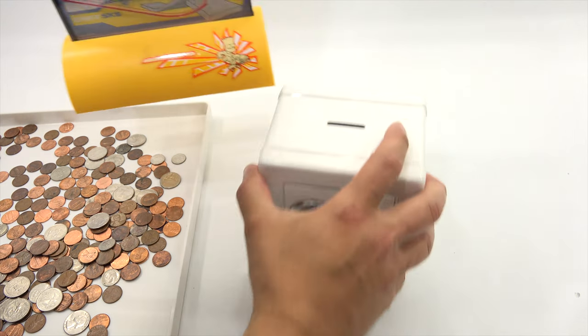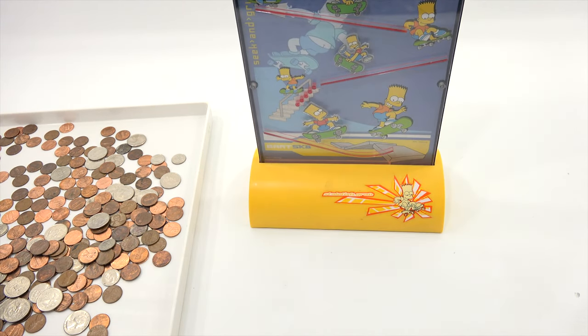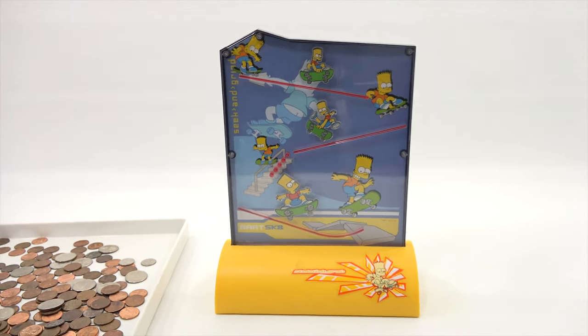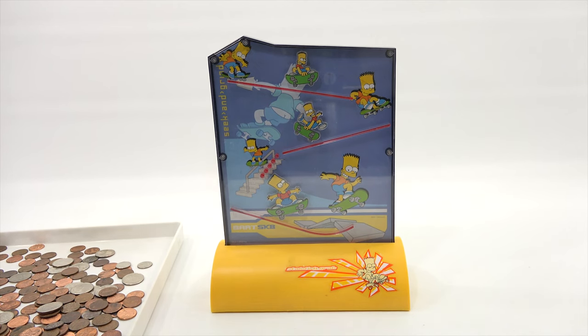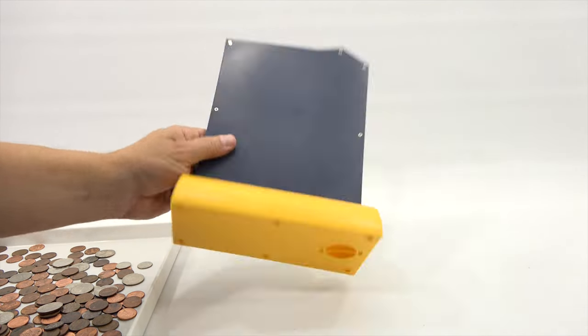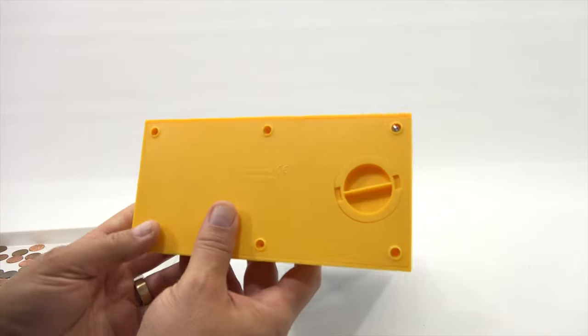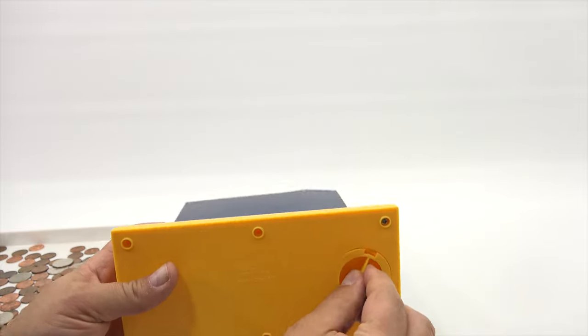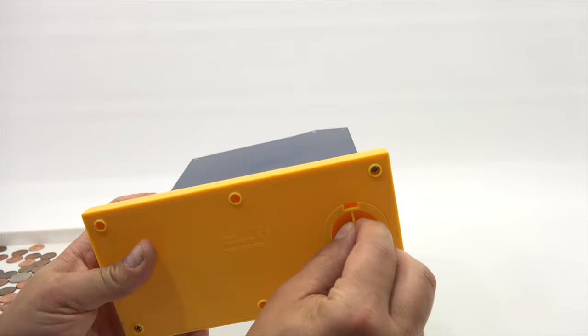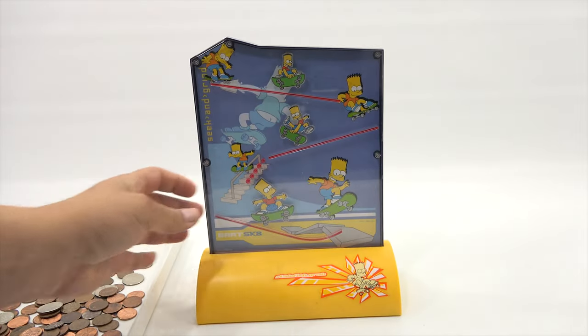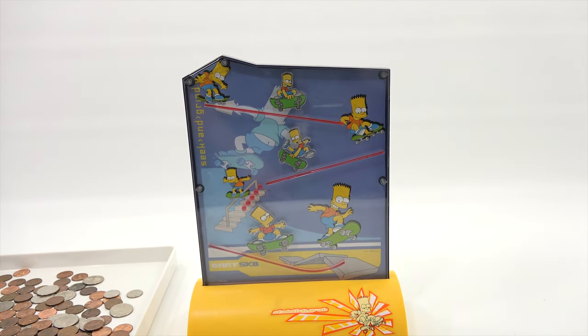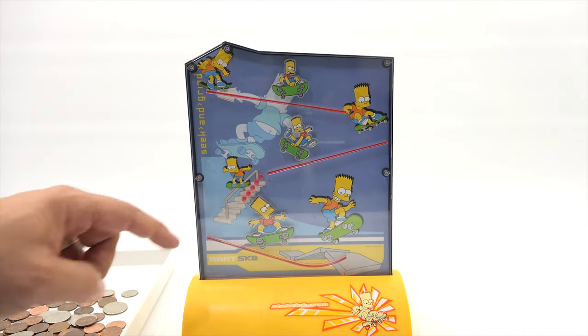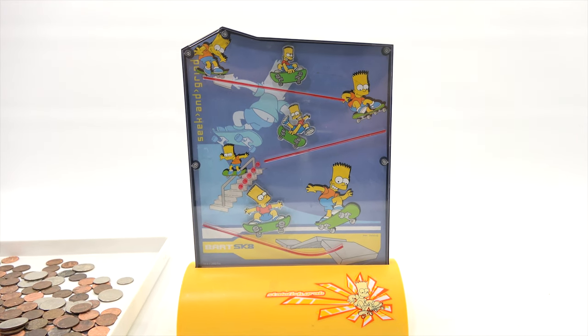This will be bank number two. This one here I've had for well over a year, just never thought should I bring Bart Simpson into a video - why not, I've shown some Simpsons stuff, especially Happy Meal toys. Let's see what it says - Wesco, made in China, 2002 Fox. This one opens up by twisting that to get your change out. It is pretty neat because the coins travel down and it's like a skateboard area.